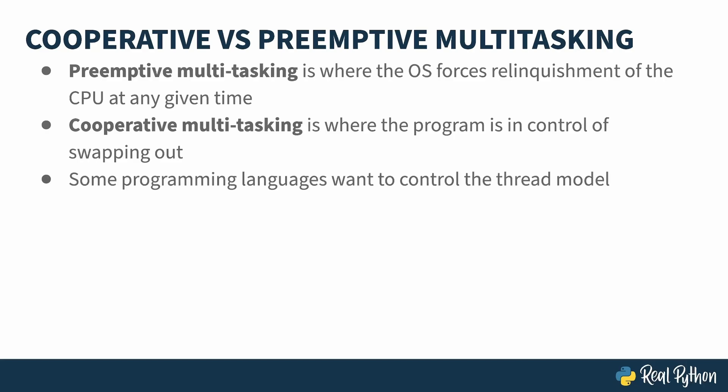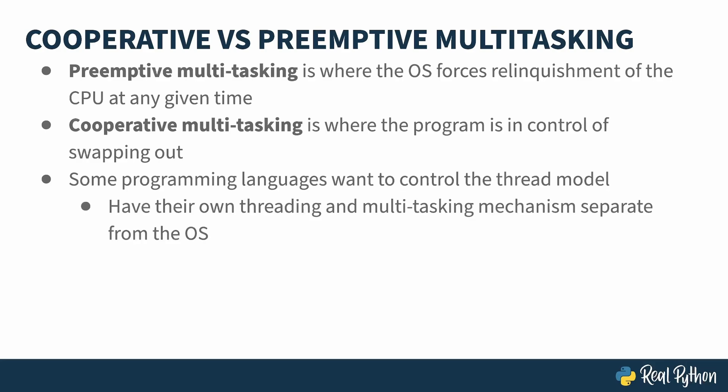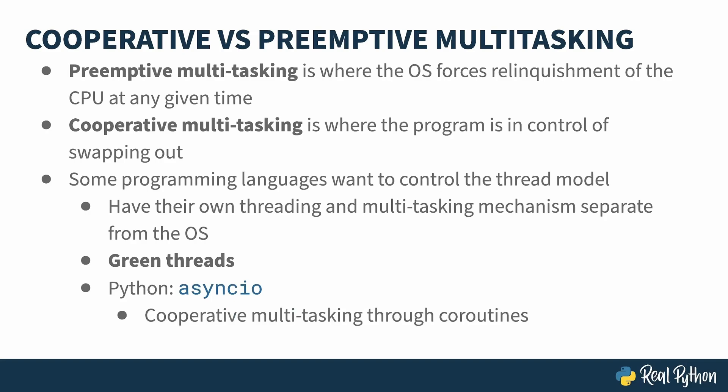Some programming languages aren't happy with the OS being in control of thread scheduling. This is more common in languages with cross-platform runtimes, and in order to give the developer a consistent thread scheduling experience on different operating systems, a language might implement its own threading mechanism. These kinds of threads are known as green threads. Python has both regular and green threads. The async.io library is a green thread library, and it uses a cooperative multitasking mechanism known as coroutines. Your code signals when it's ready to give up control, typically when it's waiting on some I/O.